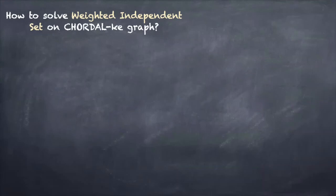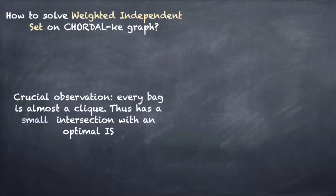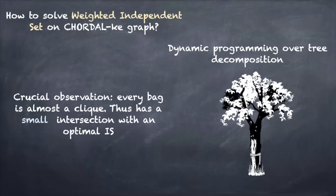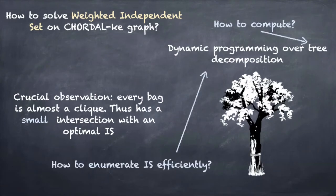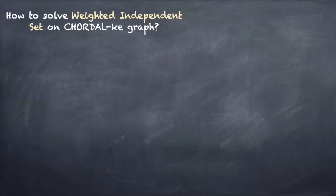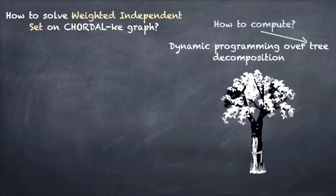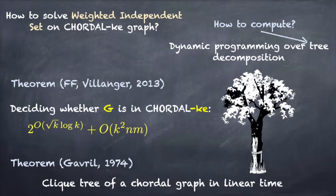We want to extend the same approach to almost chordal graphs. Here we have two issues: how to compute decomposition and how to do dynamic programming efficiently. First of all, computation of the decomposition follows from previous work. It was proved in 2013 by me and Yngve Villanger that deciding whether graph G is almost chordal in time which is sub-exponential in k. So we can find a triangulation with at most k edges if such triangulation exists in sub-exponential time. And then by the theorem of Gavril from 1974, a clique tree of a chordal graph can always be found in linear time.